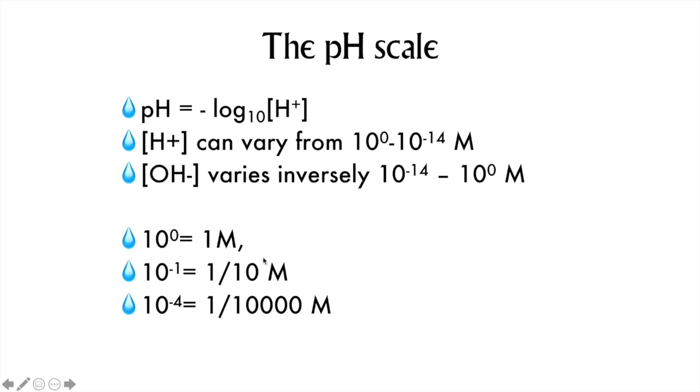10 to the power of 0 is just 1. Anything to the power of 0 is 1. 10 to the negative 1 is 1 tenth, or 1 over 10 with 1 zero. 10 to the negative 4th is 1 over 10,000, or 1 over 1 with 4 zeros after it. So that's kind of easier to remember.